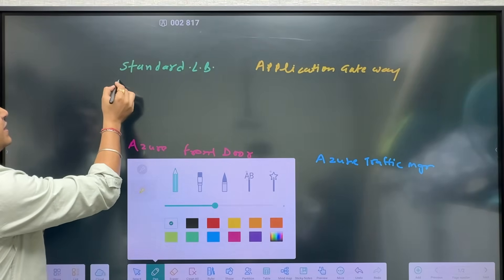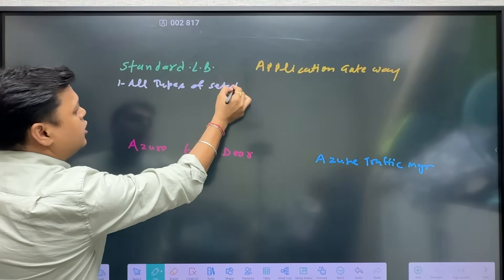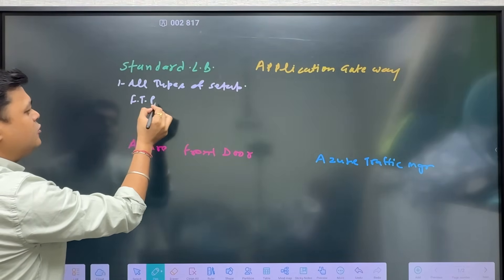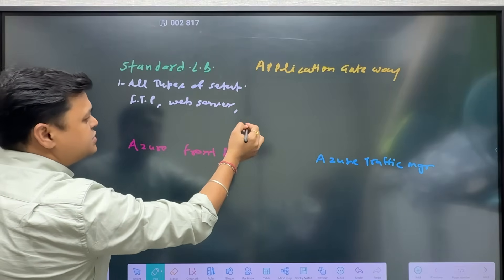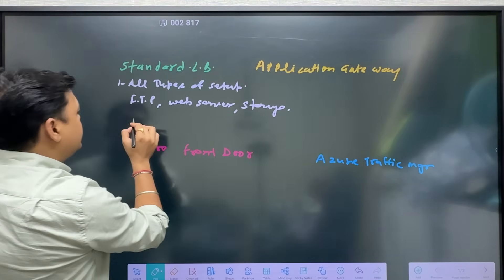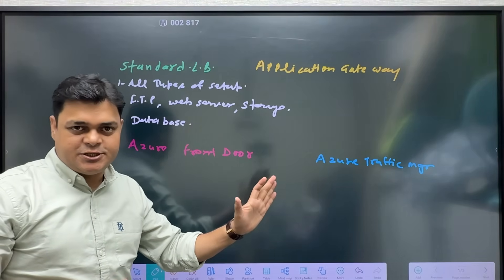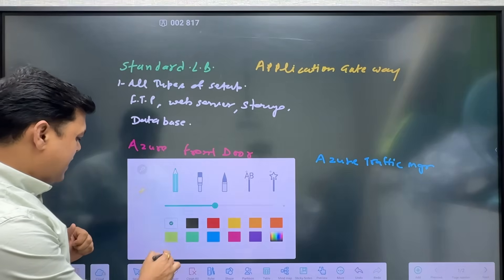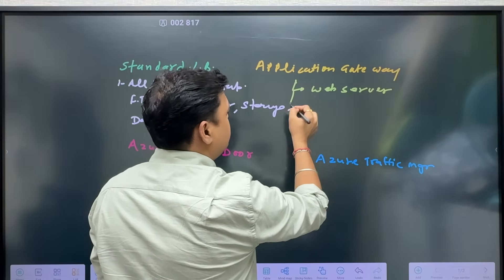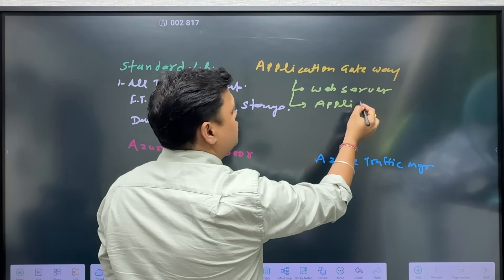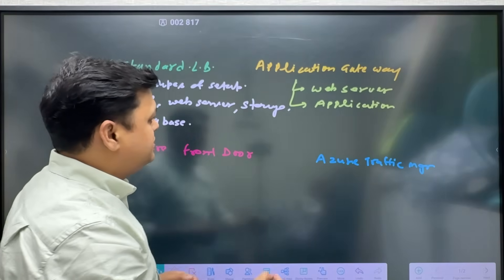The standard load balancer is applicable for all types of setup. You can configure it for FTP load balancing, web load balancing — any kind of web server, storage, or database. This load balancer helps you balance the load for every purpose. But the application gateway load balancer can help you configure only for web servers or application servers — it is specially designed for web and application servers.